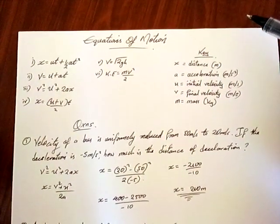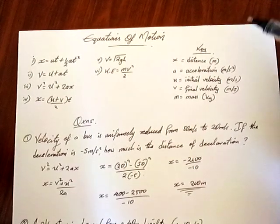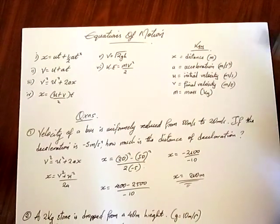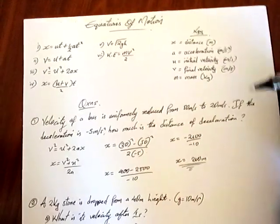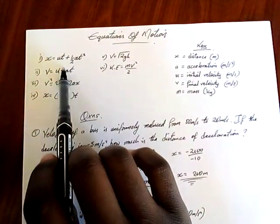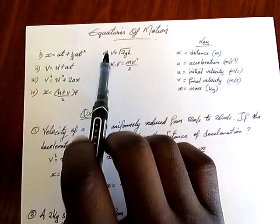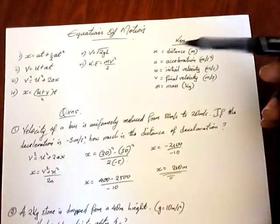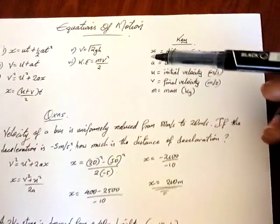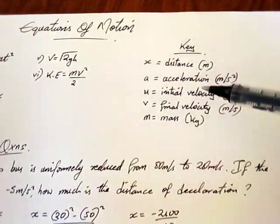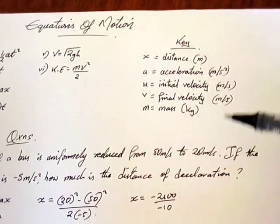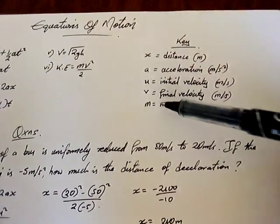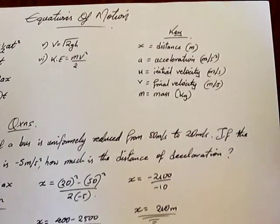Today I'm going to look at about six equations, but there are more than six — these are some of the basic and important equations in junior physics. We have our first, second, third, fourth, fifth, and sixth. They can be arranged in any order. The meaning of the symbols: X represents distance, A is acceleration, U is initial velocity, V is final velocity, and M is mass in kilograms.